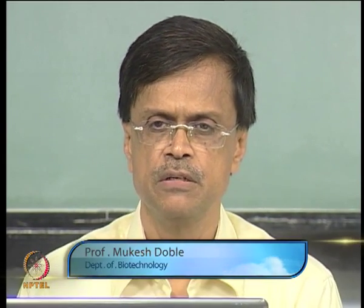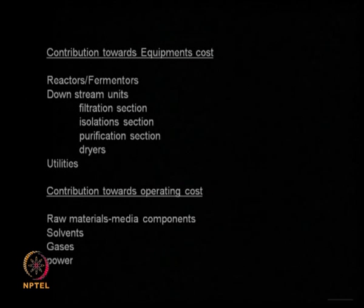In the previous lecture, we looked at different flow sheets, which involve both production as well as purification of different types of products. In those flow sheets, I was explaining the importance of cost - the cost of raw materials, cost of equipment, and the contribution of various equipment in the overall equipment list, as well as cost of various operations in the overall manufacturing cost. Cost plays a very important role in flow sheet design, as well as in selection of a unit operation and in selecting the type of chemicals or solvents required.